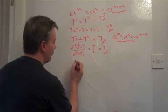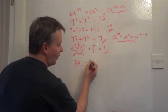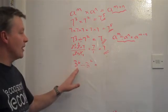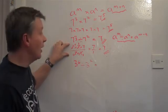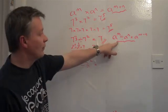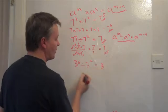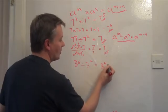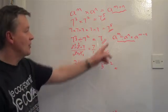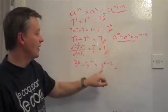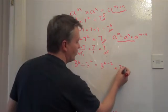The first example is 3 to the power of 6 divided by 3 to the power of 2. I'm going to use the law: 3 to the power of 6 divided by 3 to the power of 2 is the same as 3 to the power of 6 minus 2, which is 3 to the power of 4.